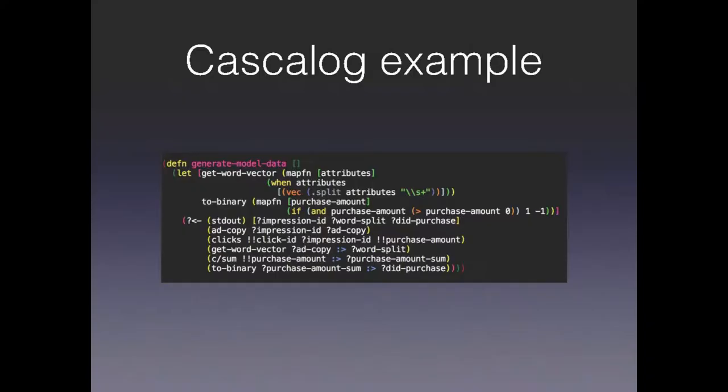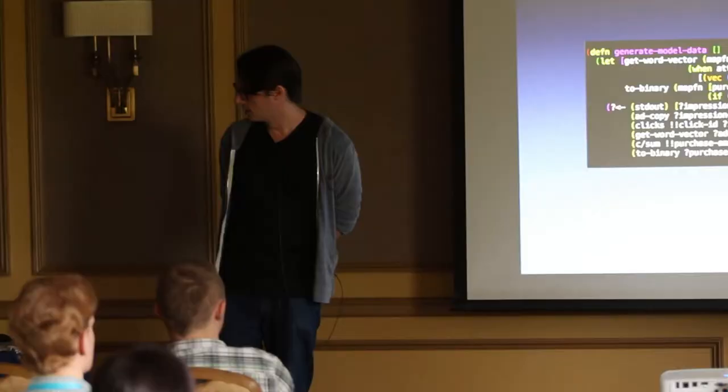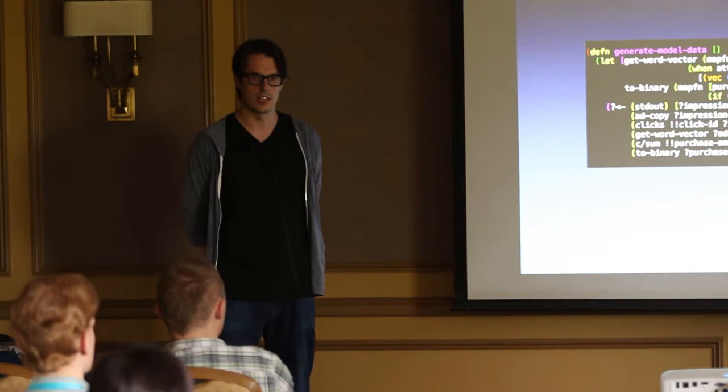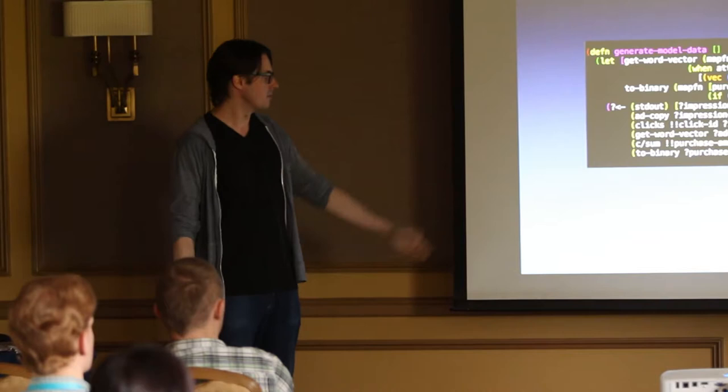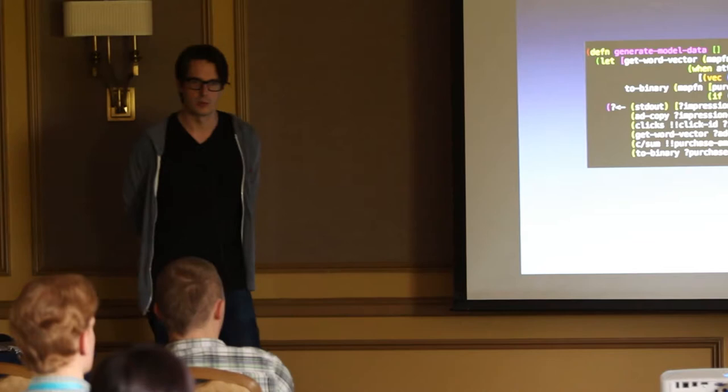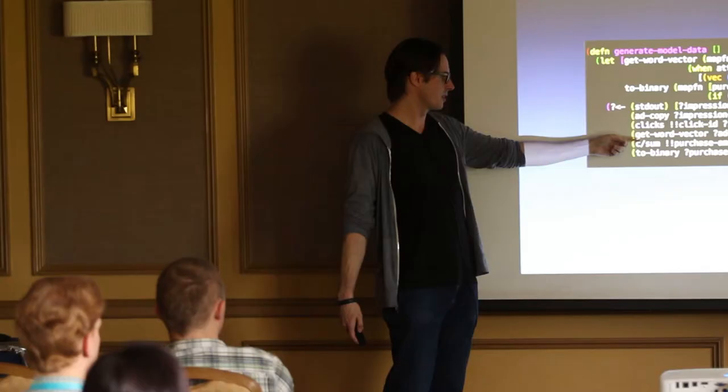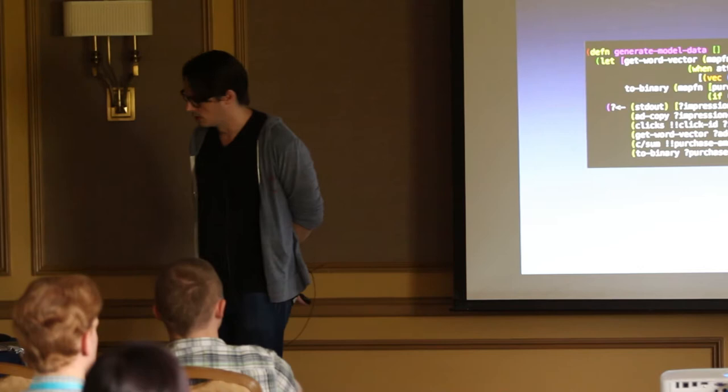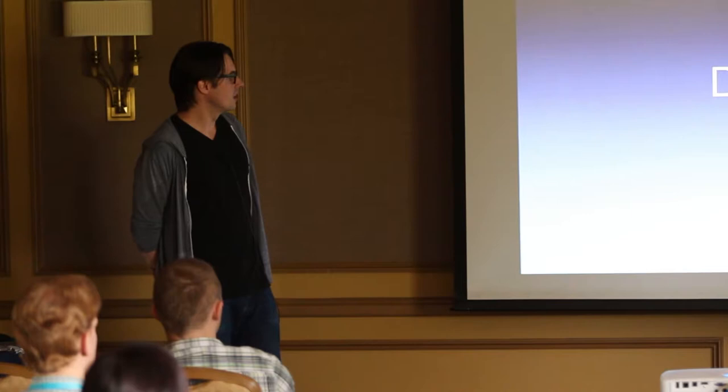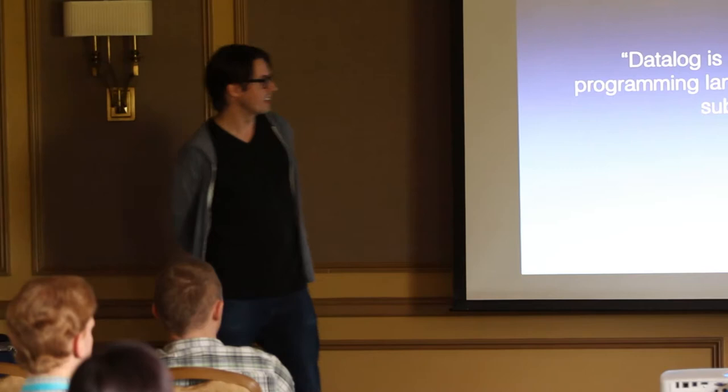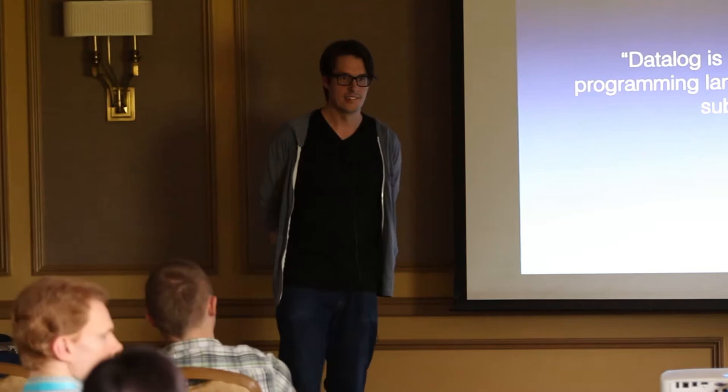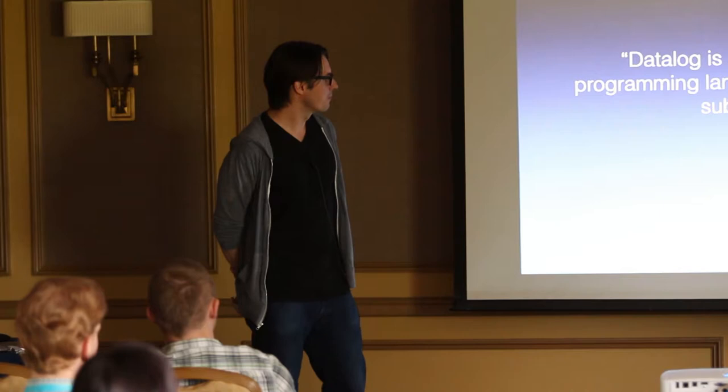Here is a Cascalog example. One downside of this is you have to learn Clojure, and you have to learn datalog. Datalog is a declarative language that is the equivalent to SQL in logic terms, but not a lot of people are actually familiar with it. Just to give you a quick overview, we work in ad calls and clicks. We pull them in here, we split them out into vectors, we sum up some amounts, and then we just want to see if it's a one or a zero. I'll walk through an example with this code in a few minutes.